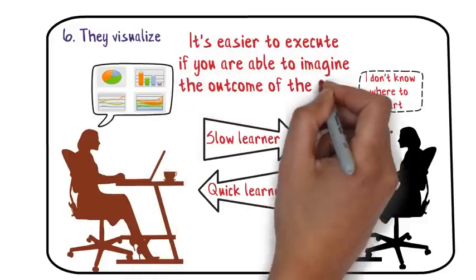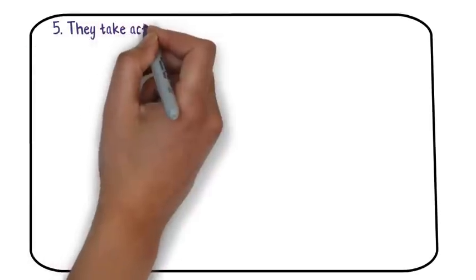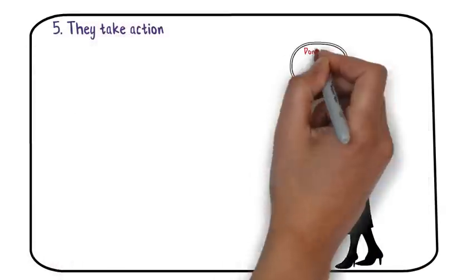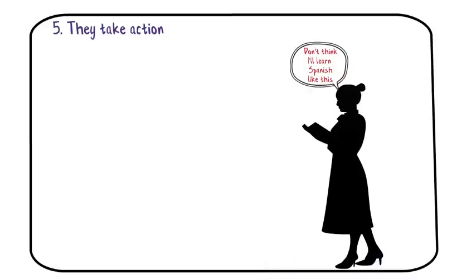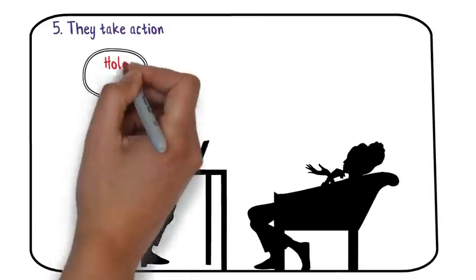Number five: quick learners take action. Let's suppose you're learning a new language. You can read all about the language rules, but you won't make much progress if you do not speak the new language, whether you get it right or not. And the same thing applies to almost everything that we learn. Quick learners learn by doing and taking decisive action.